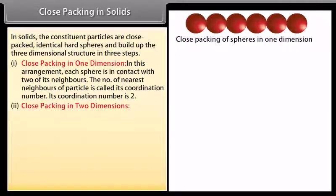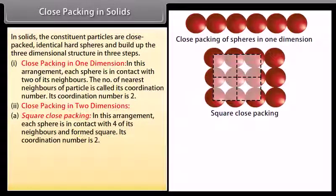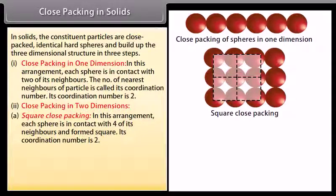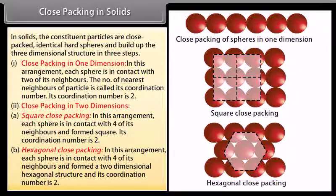Close packing in two dimensions. A) Square close packing: in this arrangement each sphere is in contact with four of its neighbors and forms a square arrangement. Its coordination number is 4. B) Hexagonal close packing: in this arrangement each sphere is in contact with six of its neighbors and forms a two-dimensional hexagonal structure, and its coordination number is 6.